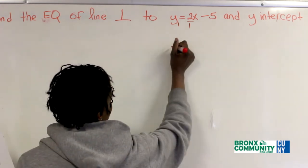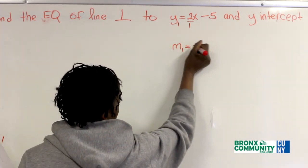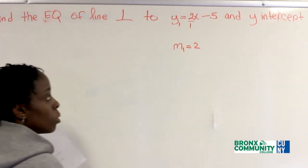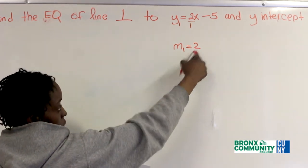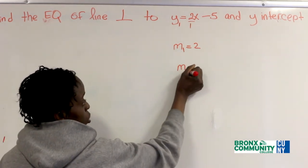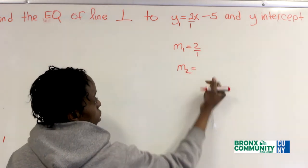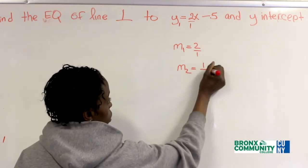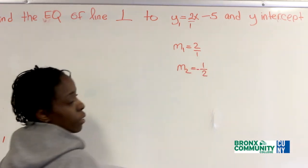I'm identifying the slope. M1 is equal to 2, but we want the slope perpendicular to this. So M2 is equal to - you flip that, becomes 1 over 2, but it's negative.